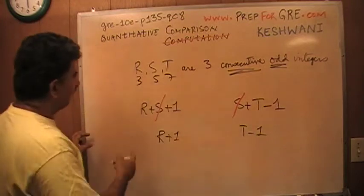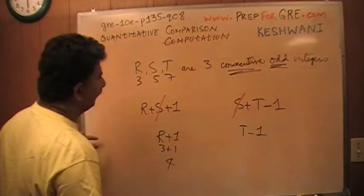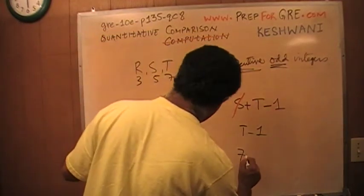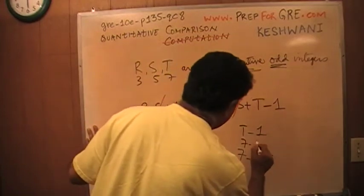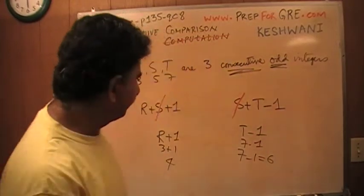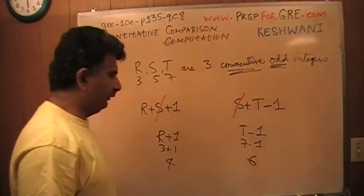Let's put in 3, 5, 7. So R plus 1 is going to be 3 plus 1 which is 4, and T which is 7 minus 1 which is 6. You see? 7 minus 1 which of course is 6.